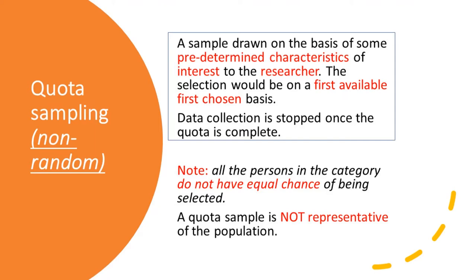The researcher goes out and finds the person, perhaps in a public space where such people are easily available. If the person fits the type of respondent wanted — in other words, if the woman happens to be a working mother of a child less than 5 — he interviews that person until he reaches the quota of 50 with similar characteristics. You should note that all persons in that category do not have equal chance of being selected. Quota sampling is not a representative sample of the population.